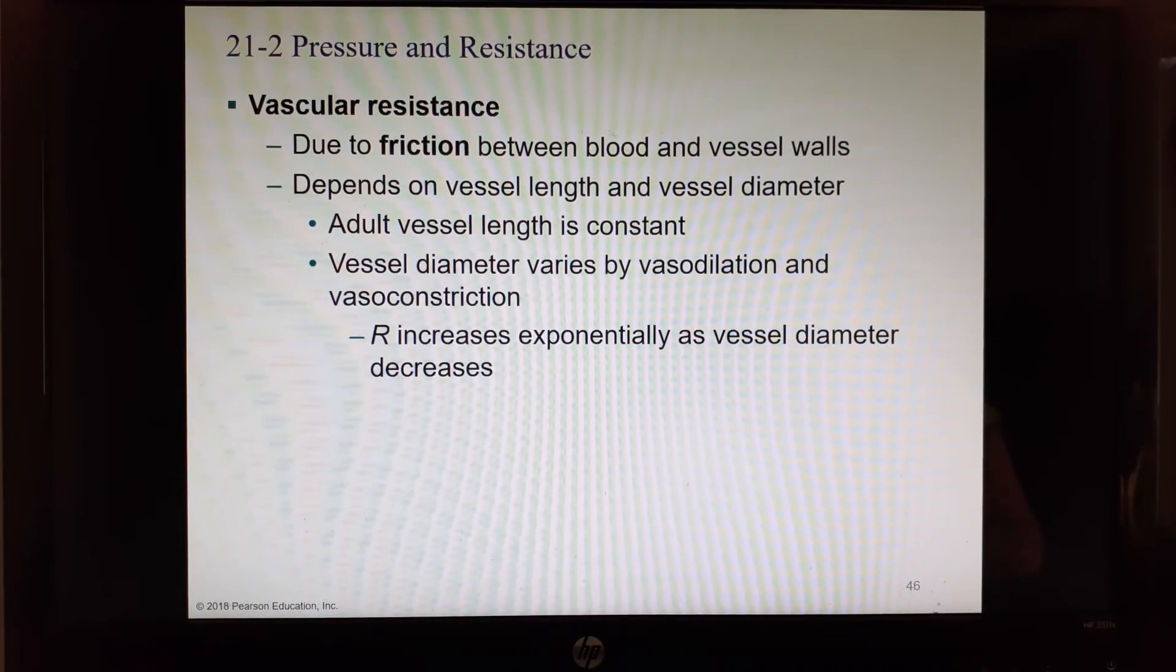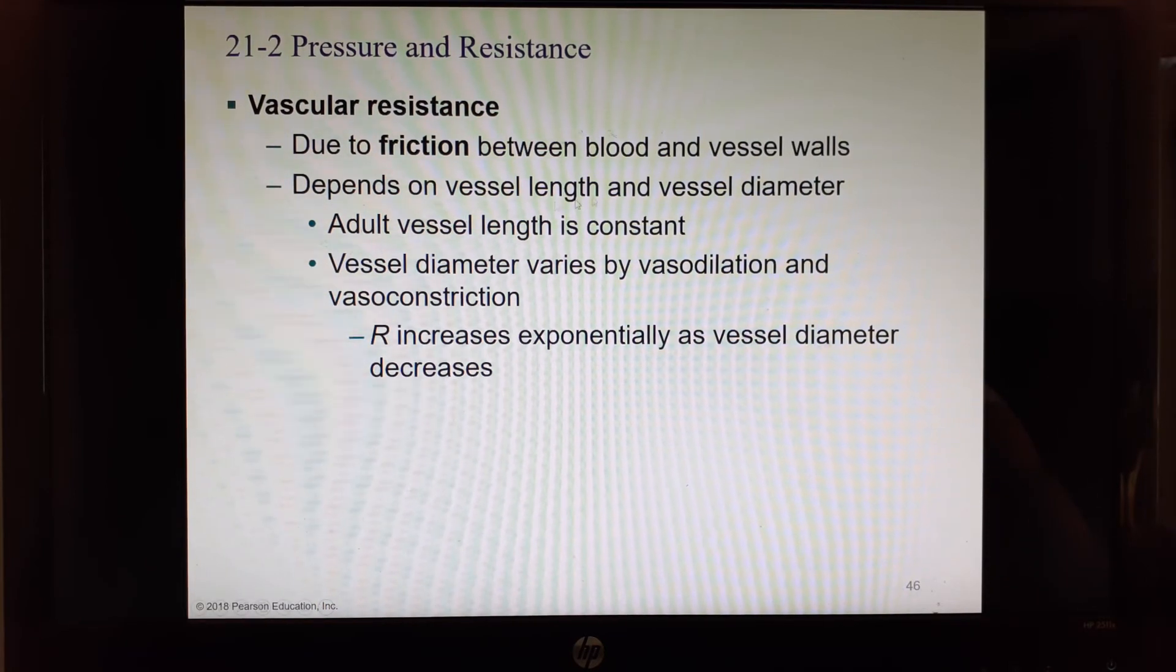Vascular resistance is the scraping of the blood cells as they're going through the vessel and creating friction. It depends on the length of the vessel and the vessel diameter. When you're done growing, your vessel length is constant. You can change your vessel diameter by making it bigger through vasodilation or making it smaller through vasoconstriction. Resistance increases as vessel diameter decreases.